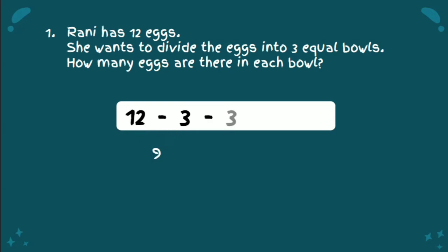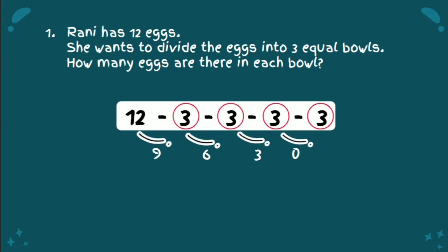9 minus 3 is equal to 6. 6 minus 3 is equal to 3. We subtract again. 3 minus 3 is equal to 0. Now we already get 0 here, it means we have done. Now, please count how many times we subtract 3 from 12. We subtract 3 from 12 four times. So, 4 is the answer.